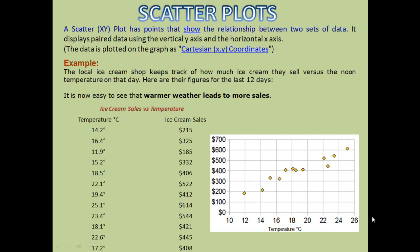The last type is scatter plots. A scatter plot, or XY plot, has points that show the relationship between two sets of data displayed as paired values in Cartesian XY coordinates with a vertical Y axis and horizontal X axis. For example, taking temperature and ice cream sales: when you plot these figures with the X axis depicting temperature and the Y axis depicting ice cream sales, the plots clearly show that warmer weather leads to more sales. Scatter plots help you find regression analysis and correlation — positive correlation, negative correlation, and so on — explaining how the X and Y variables move together.